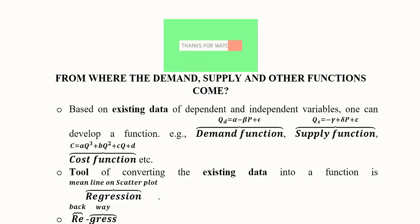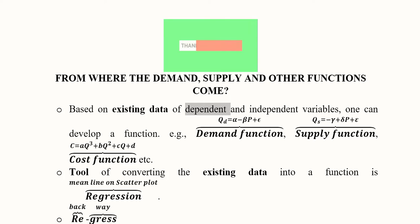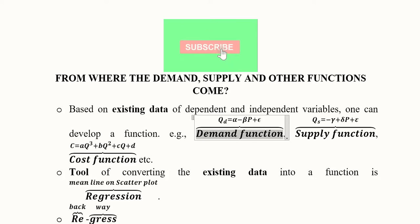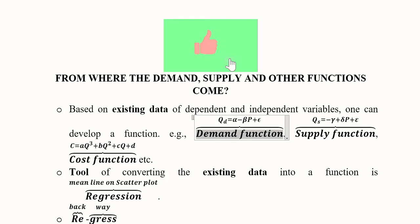With regression, we get some existing data that can help us establish the relationship between a dependent and an independent variable. For example, to develop the demand function, we use its standard form where quantity demanded is the dependent variable, alpha is the intercept, beta is the slope, p is the price (the independent variable), and the error term captures remaining variables such as price of related goods, income, taste, weather, and location.